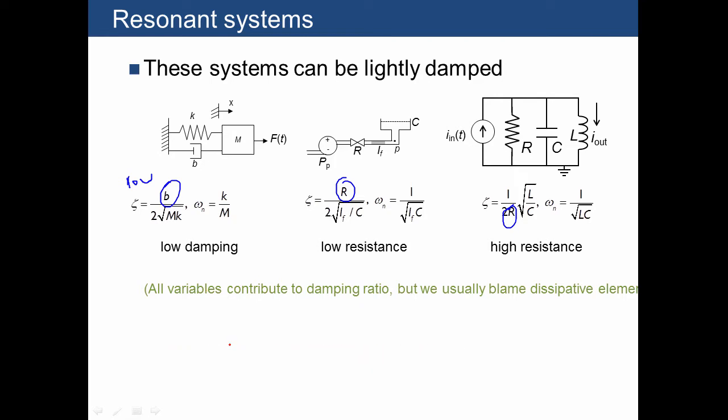What happens with resonant behavior is if you solve for a free response or a step response, the system's going to oscillate with a relatively slow decay, as we've seen many times before. So this might die out with an exponential, which is quite long.